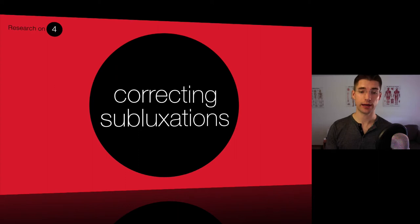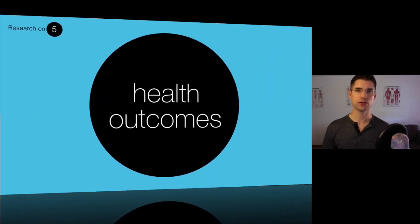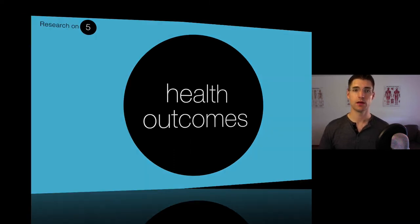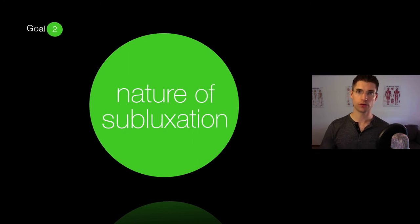And then what we need to do is research the clinical strategies for preventing and correcting these subluxations. So does the chiropractic adjustment clear the spine of this interference? And once we've done all that, the fifth focus of research is to measure and collect all of the health outcomes that come from this, showing that chiropractic adjustments lead to better health and enhanced salutogenesis or better expression of life. So that's the second goal, focusing on the nature of subluxation.